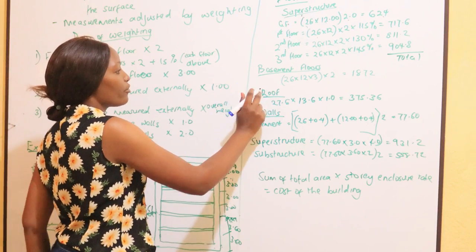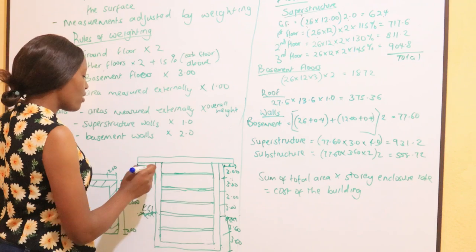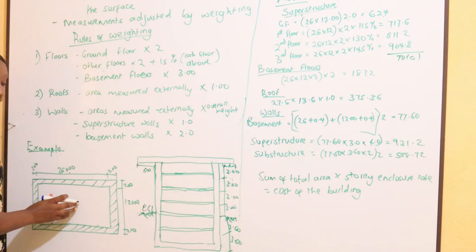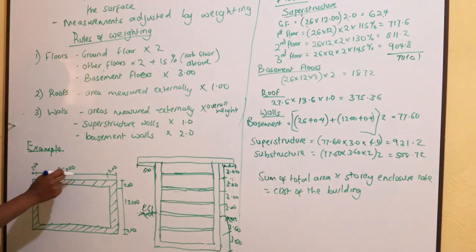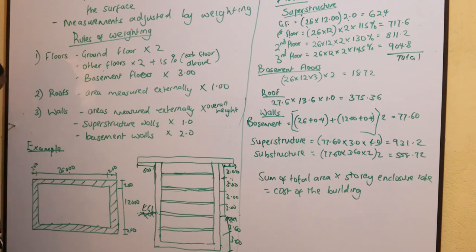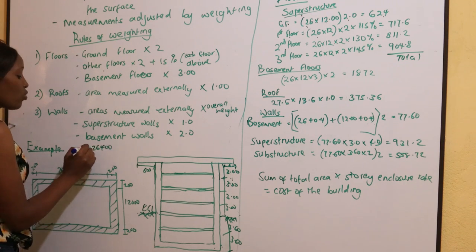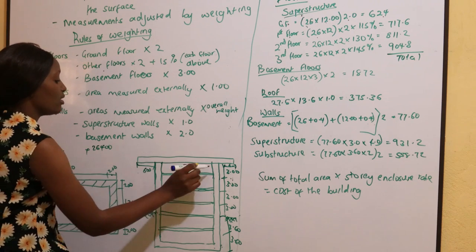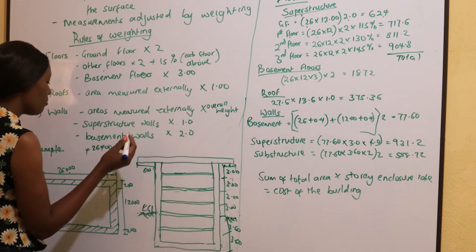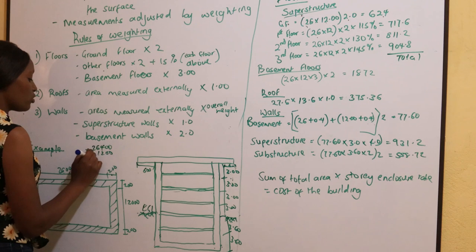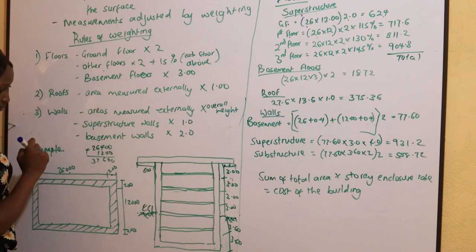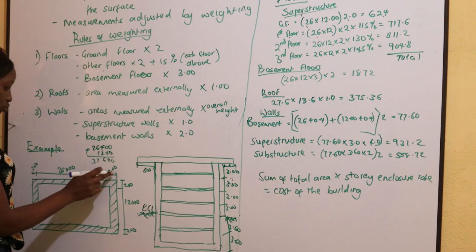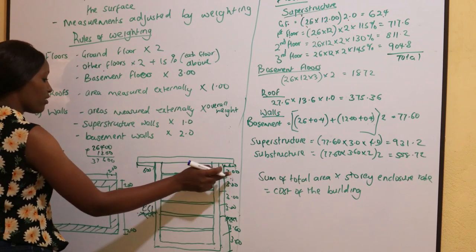Then we go to the roof. The roof is measured externally. On the plan we were given the floor as 26,000 internally. We add the walls: 200 plus 200 equals 400, so 26,000 plus 400 gives 26,400. Then we add the eaves — the extensions added for the roof — 600 plus 600, which is 1,200. So 26,400 plus 1,200 gives 27,600.